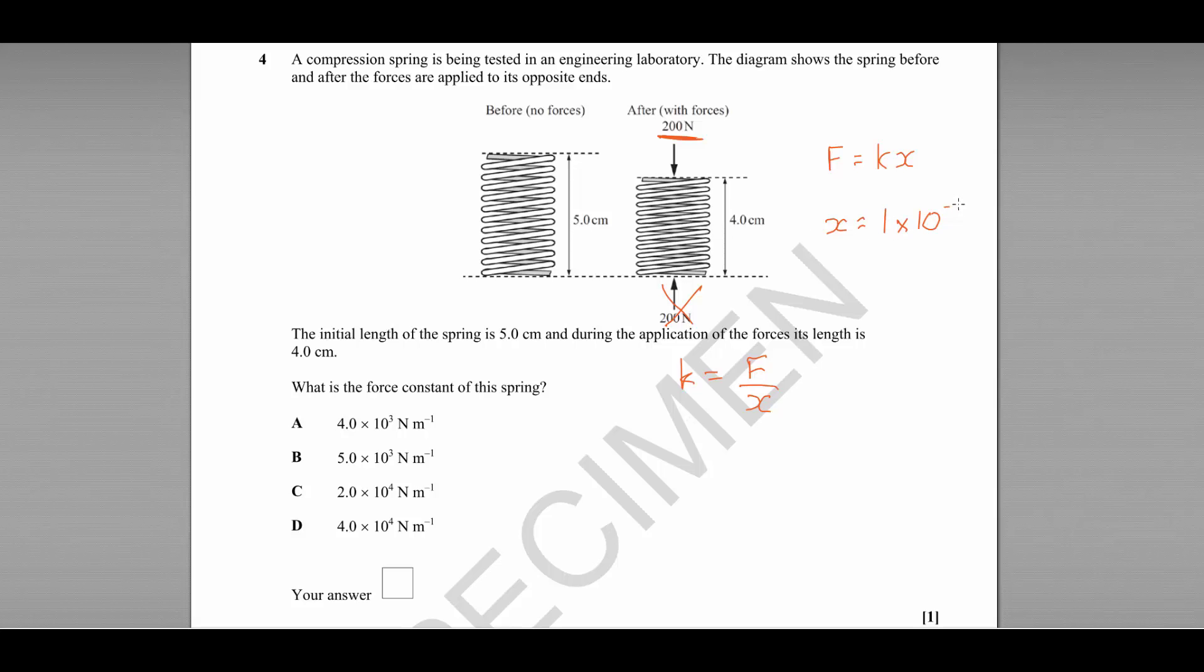So we're left with 200 Newtons divided by 1 times 10 to the minus 2, which gives us 2.0 times 10 to the power of 4, which is answer C.